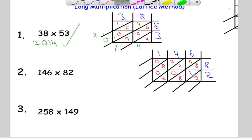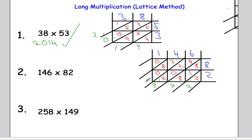Now, just like before, add up these diagonal bits, starting from the bottom right. 2 on its lonesome. 8 and 8 is 16 and 1 is 17 — put down the 7, carry 1. 4 and 2 is 6, 6 and 2 is 8, 8 and 1 is 9 — not carrying anything now. 8 and 3 is 11 — put down the 1, carry 1. And 1 and 0 is 1. So the answer to this problem is 11,972, reading around that way.